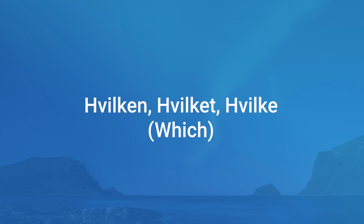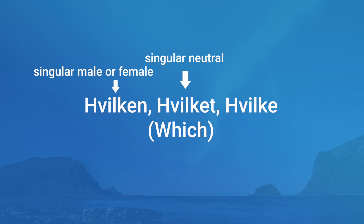Which one you use depends on the gender and amount. 'Hvilken' is used for singular male or female nouns. 'Hvilket' is used for singular neutral gendered nouns. 'Hvilke' is used for plural. So, once again, they are hvilken, hvilket, hvilke.